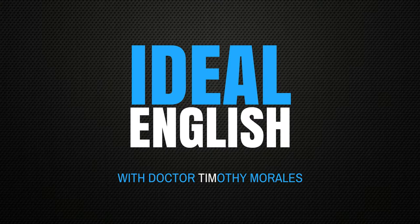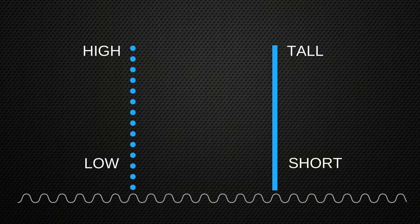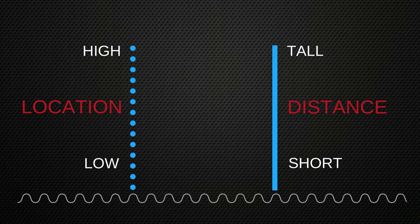Now it can be confusing because both high and low and tall and short are talking about vertical distances. But the difference is that high and low is talking about location, about position, whereas tall and short is talking about distance — it's the measurement from the bottom of the object to the top of the object.